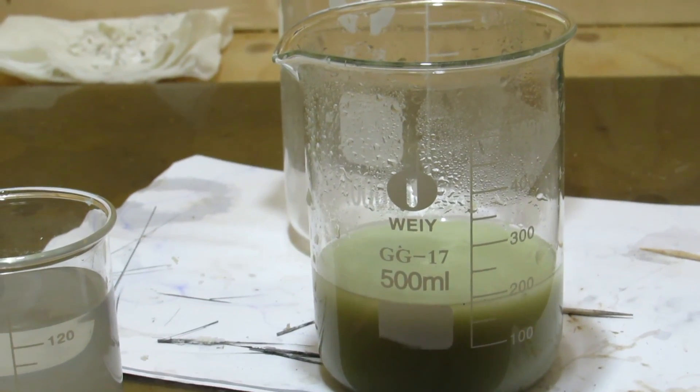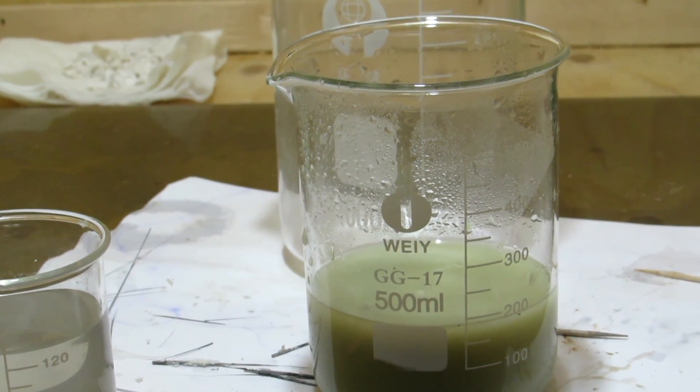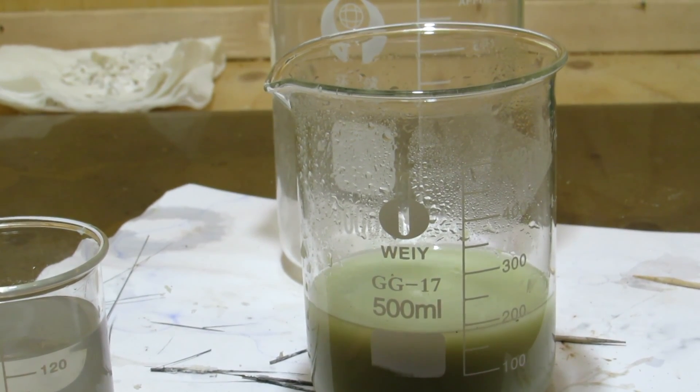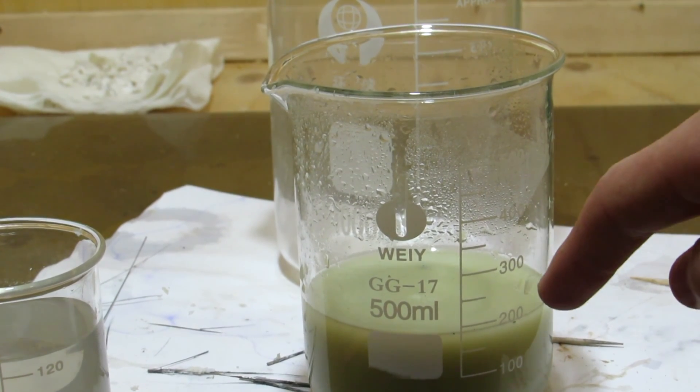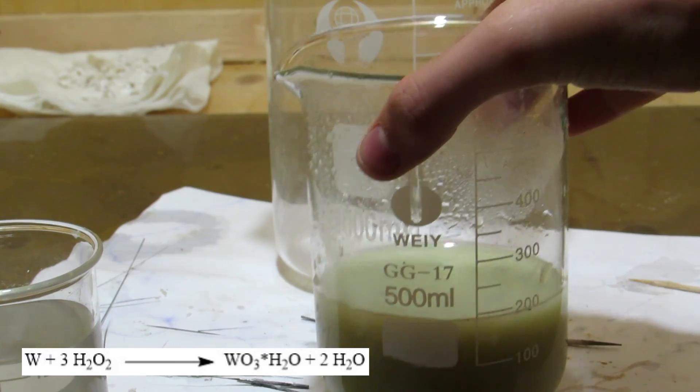The thorium dioxide also contained bits of undissolved tungsten, so the large chunks of rod were removed, and the thorium dioxide was rinsed and then added to about 200 milliliters of 30% hydrogen peroxide to finish dissolving the remaining tungsten.